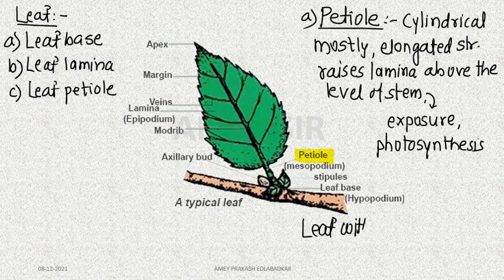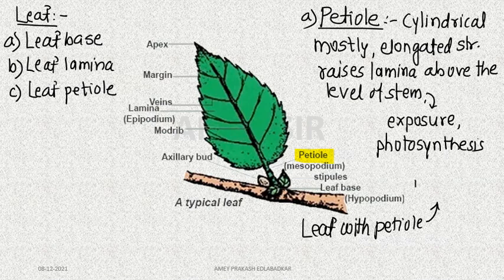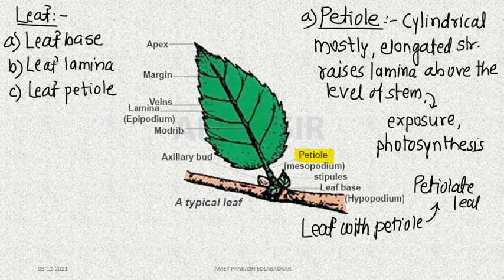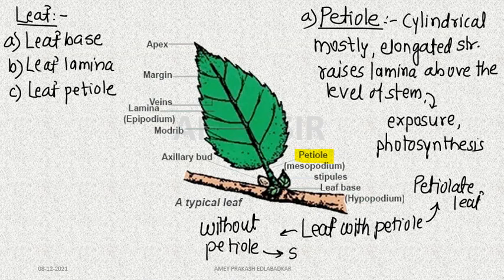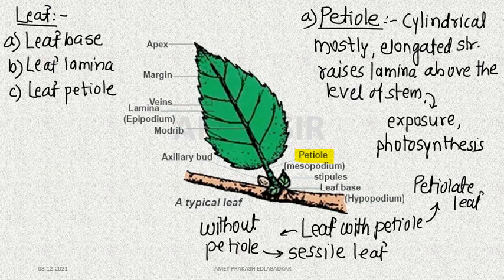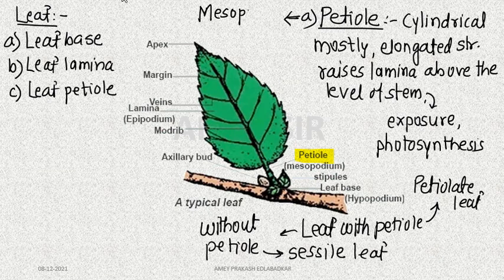Remember: a leaf with a petiole is said to be a petiolate leaf. A leaf without a petiole is said to be a sessile leaf. So there are two types. The petiole itself is referred to by the term mesopodium.